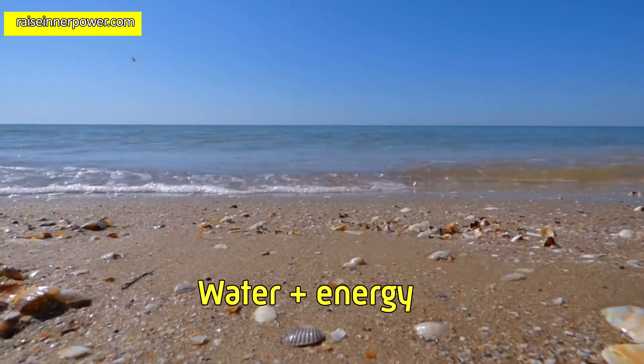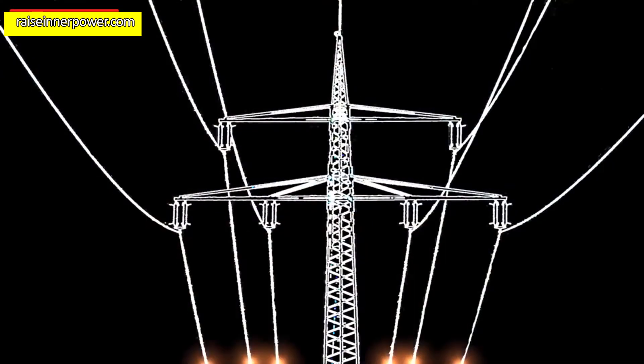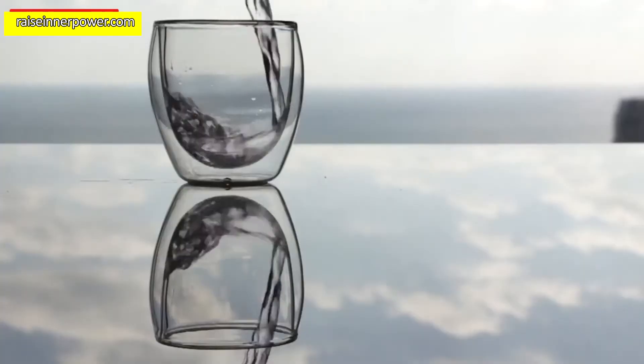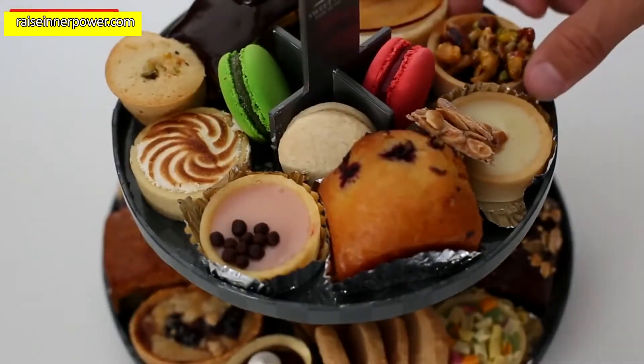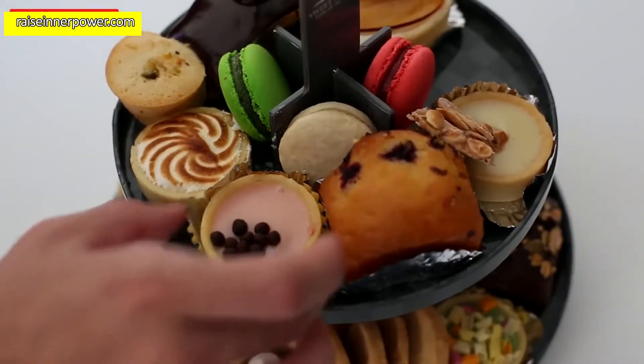Water plus energy. Our brain spends 25% of the body's energy. If you want to think better, drink a glass of water and after 10 minutes eat something sweet. This will help energy reach the brain faster.